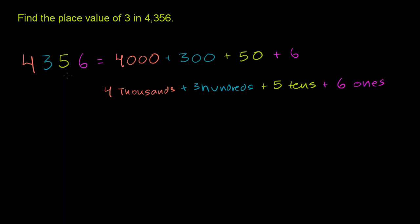If we go back to the original number 4,356, this is the same thing as 4 thousands, 3 hundreds, 5 tens, and then 6 ones.